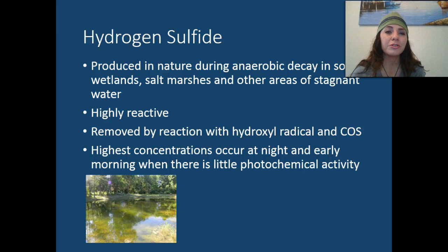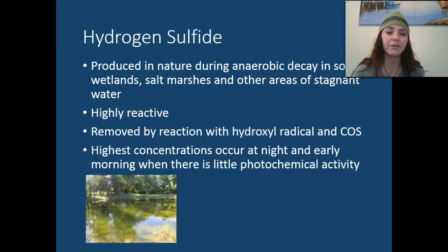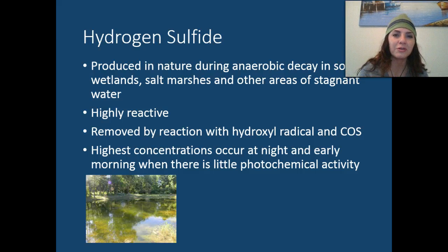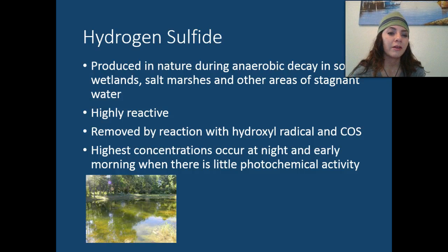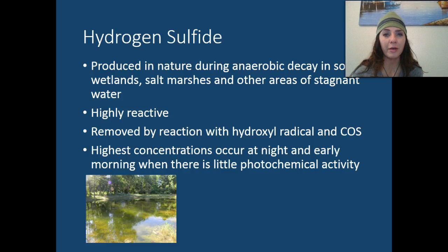Hydrogen sulfide is produced in nature during anaerobic decay in soils, wetlands, salt marshes, and other areas of stagnant water — that's where you see a lot of bugs and mosquitoes. It's very highly reactive and is removed by reaction with hydroxyl radical and carbonyl sulfide. It has the highest concentrations at night and early in the morning when there is little photochemical activity.